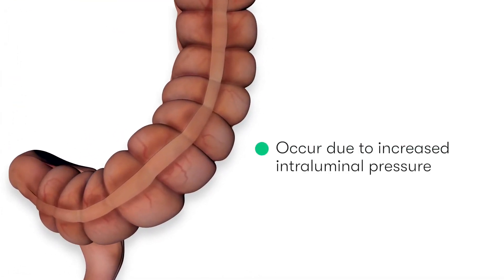Diverticuli appear to occur as results of increased colonic intermittent pressure, which over time appears to encourage external protrusion of the inner colonic layers.